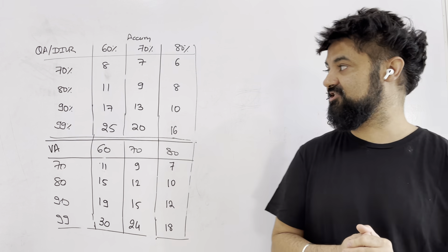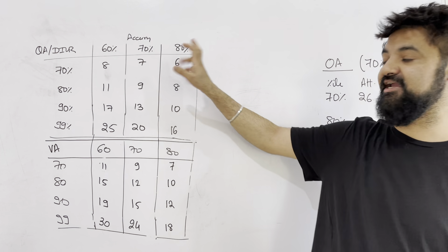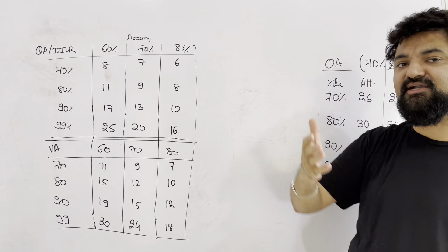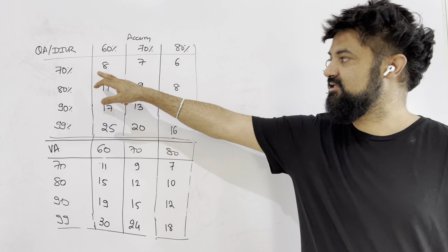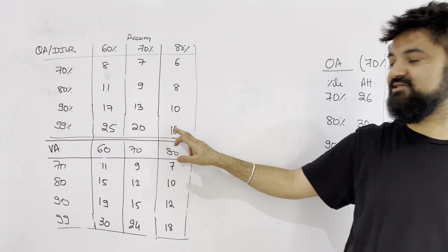Now we go to section wise section. For quant and DI logic, the number is almost same. My accuracy is 60, 70, 80. Quant and DI, normally the accuracy is higher. So you can look at 60, 70, depending on whatever accuracy you are getting, 70 percentile, 80 percentile, 90 percentile and 99 percentile.